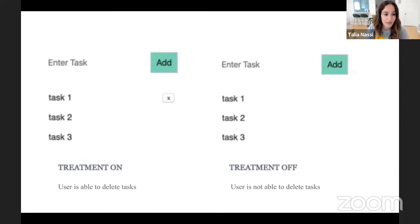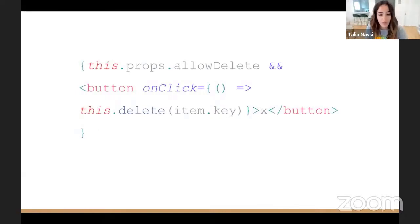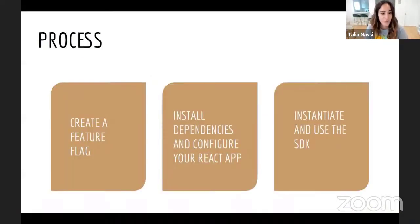And this is what it would look like in each case. What I had before was a super hacky way to do this because I'm hard-coding whether or not the user can delete. This is actually the right way to do it in React — depending on the value of the prop, you're either going to show the delete button or not show it. So what we're going to do today is create a feature flag, install all the dependencies, configure the React app, and then instantiate and use the SDK.